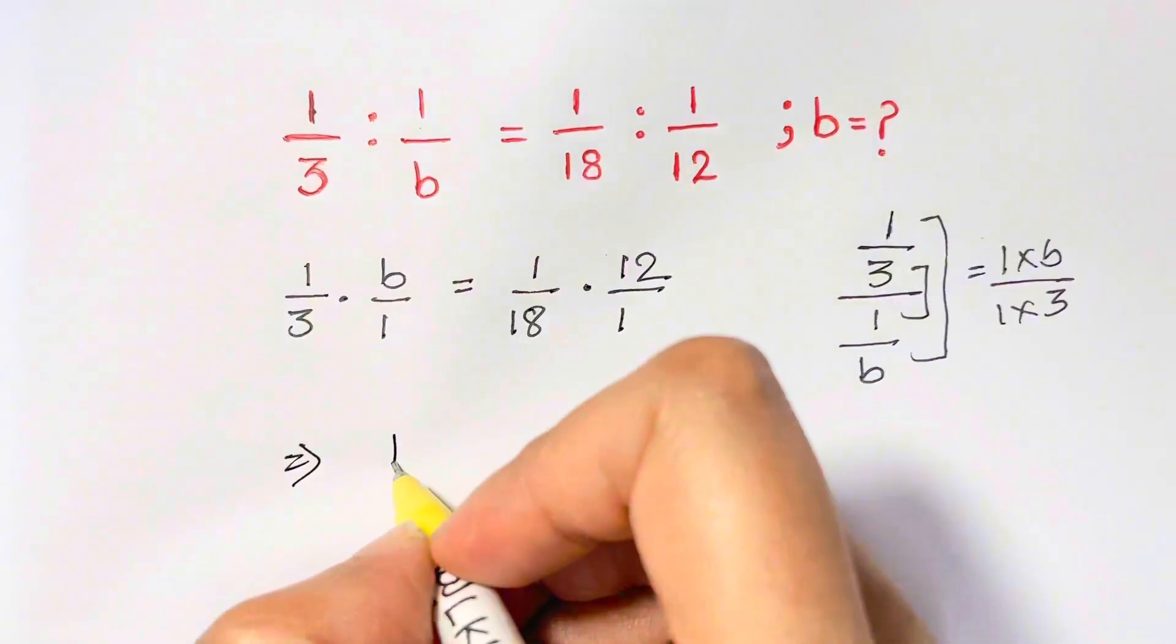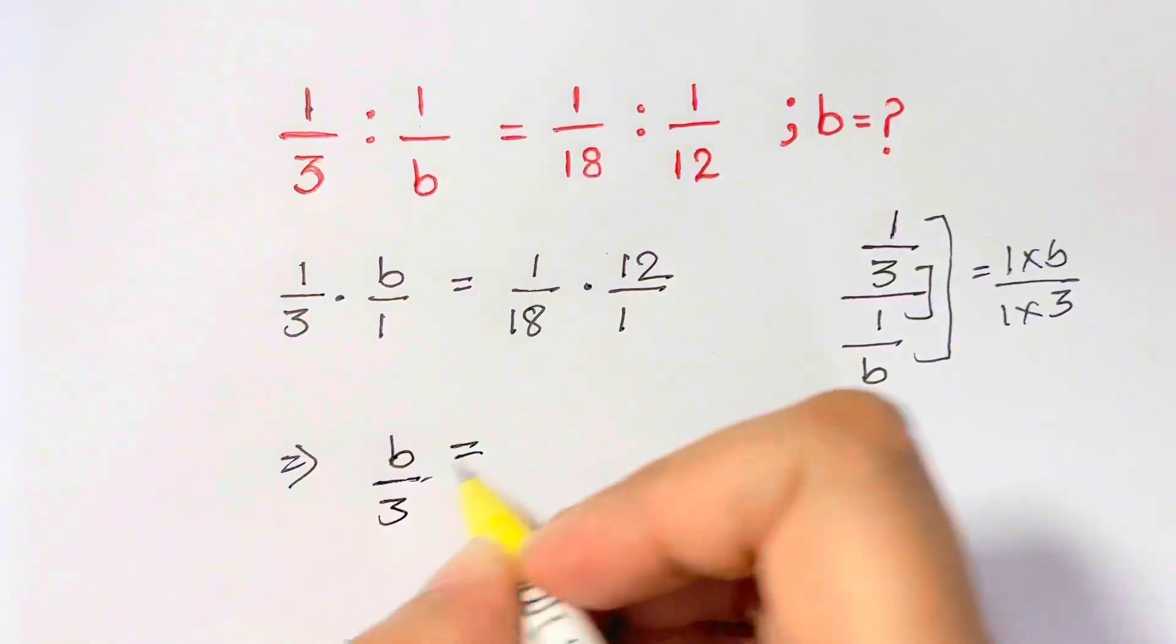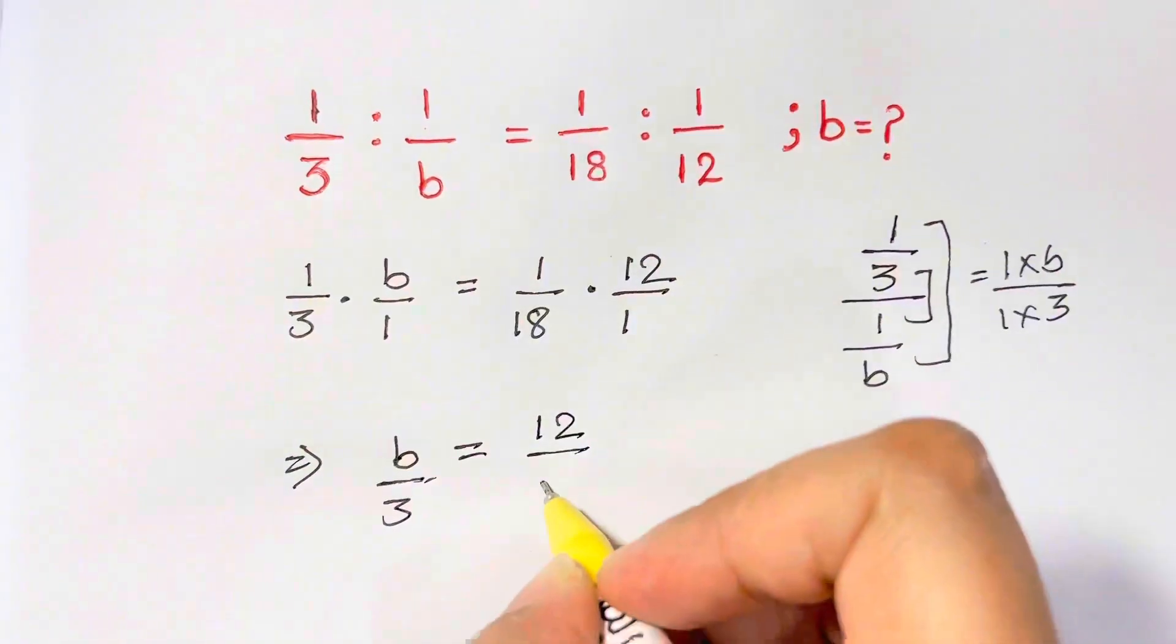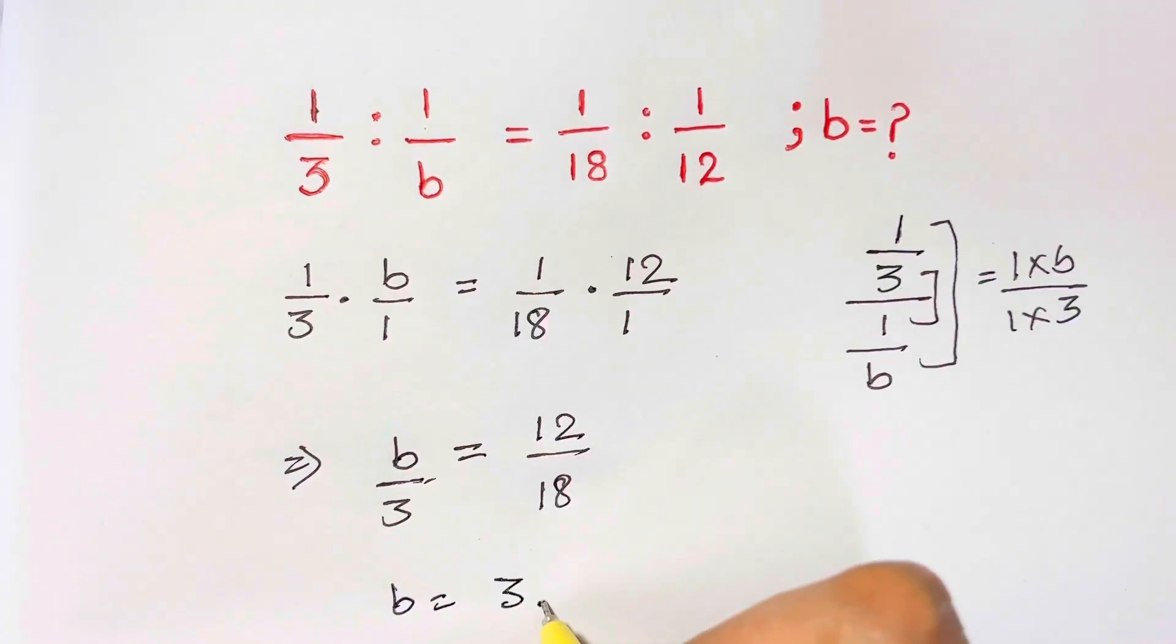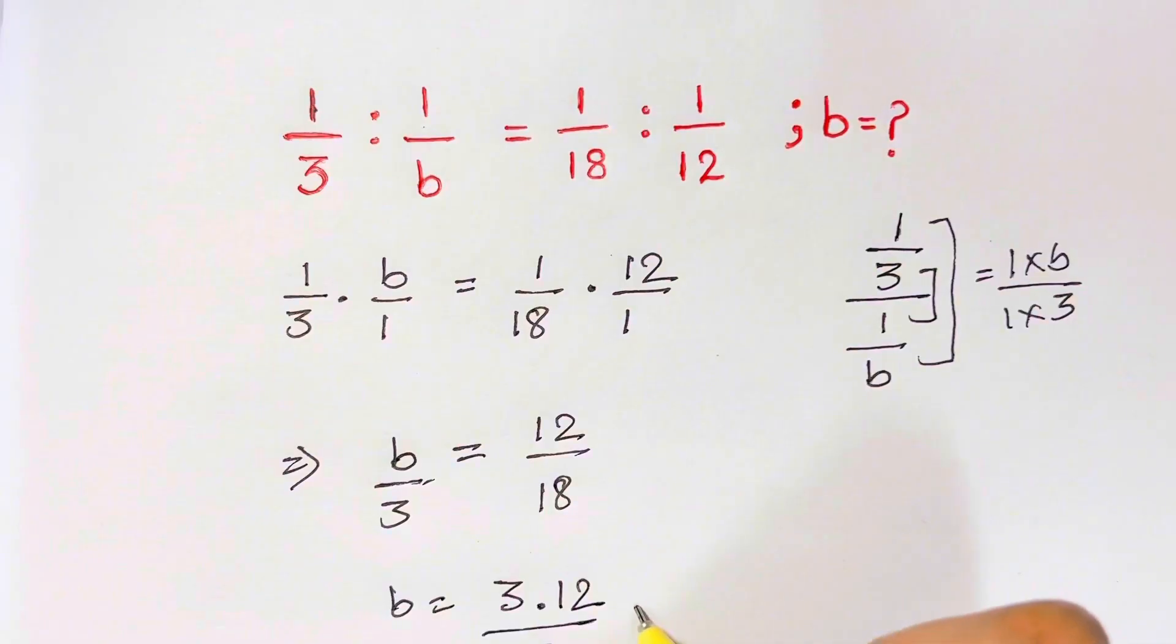So that's equal to B over 3 which is equal to here 12 over 18. Now just cross multiply things. So B is equal to 3 times 12 over 18 which is equal to 2.